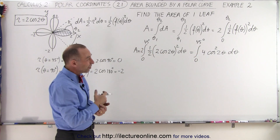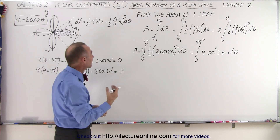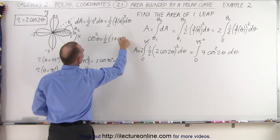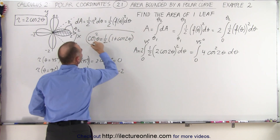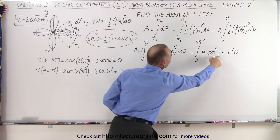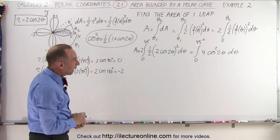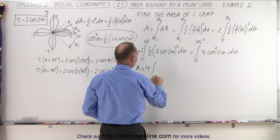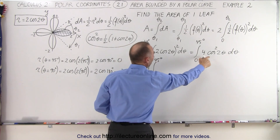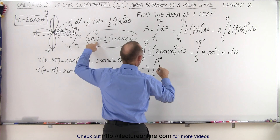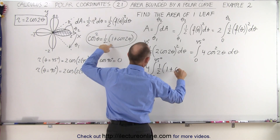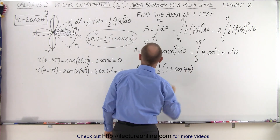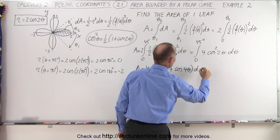We can bring the 4 out, but we still have cosine squared of 2 theta, so now we need an identity. We know that cosine squared of theta can be written as one half times (1 plus the cosine of 2 theta). So if we use this identity with 2 theta instead of theta, and bring the 4 out, the area is equal to 4 times the integral from 0 to 45 degrees of one half times (1 plus the cosine of 4 theta) d theta, where the doubled angle is now 4 theta.